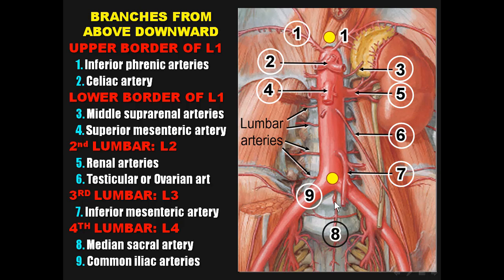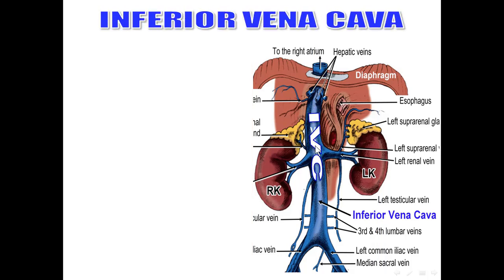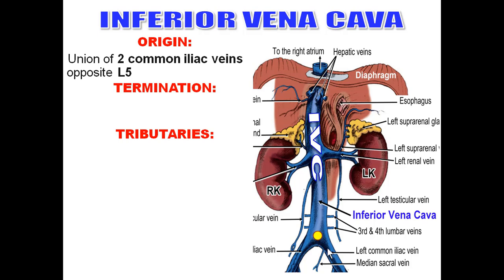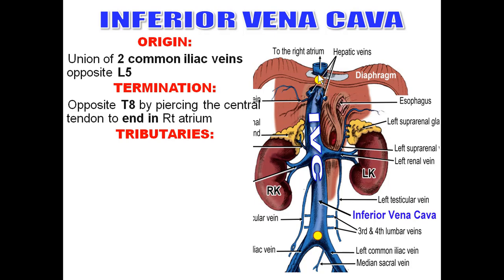That covers the abdominal aorta. Now the inferior vena cava. It forms by the union of the two common iliac veins opposite L5 in the intertubercular plane. It terminates by piercing the central tendon of the diaphragm opposite T8 to end in the right atrium.